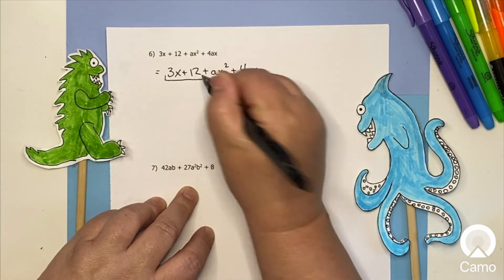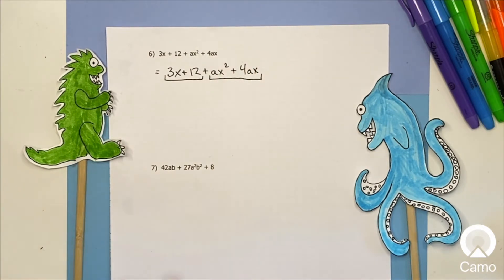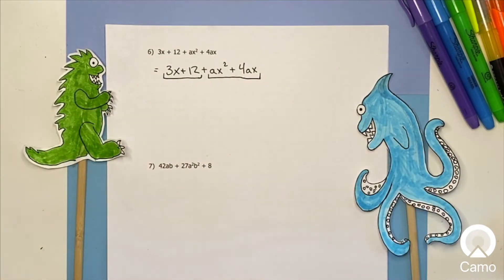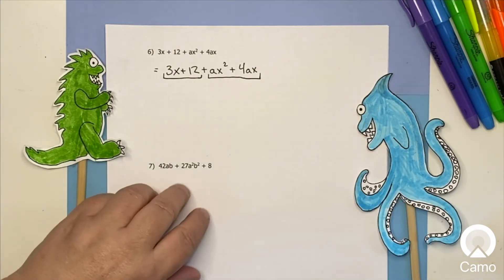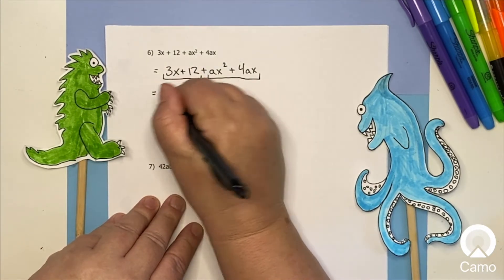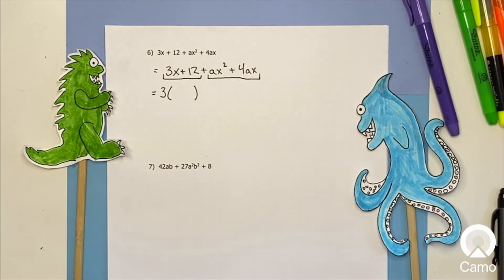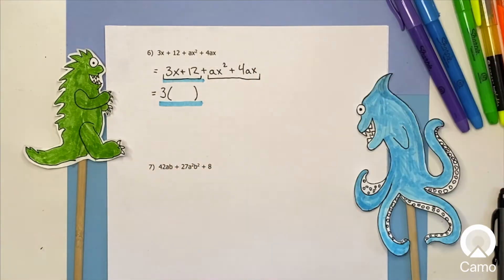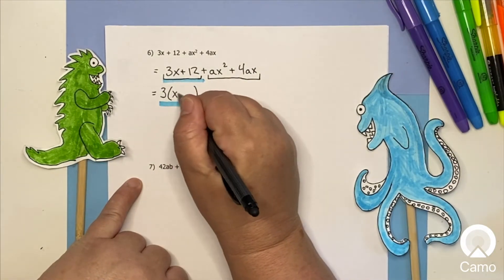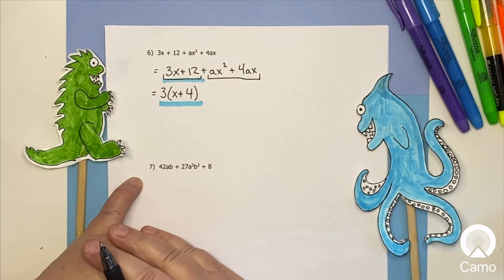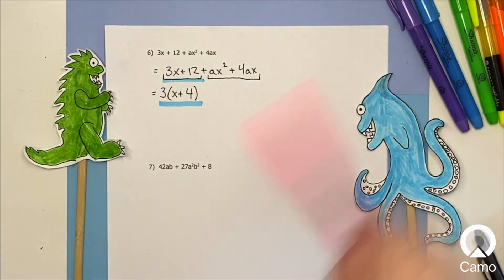...instead of trying to find a common factor for the whole thing, you look at pieces and see if you can break down those pieces. Looking at the first two terms, I see that three is common to both. So just for those first two terms, I factor out a three and I'm left with X plus four — since 12 divided by 3 is 4.